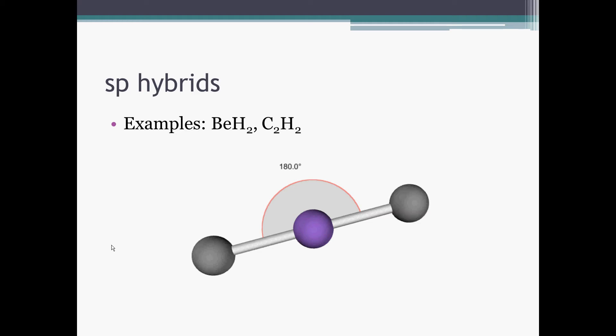The simplest of the hybrids, an overlap of an S and P orbital to form two sigma bonds, is the SP hybrid. It results in a linear geometry, 180 degrees between the two atoms bonded to the central atom.